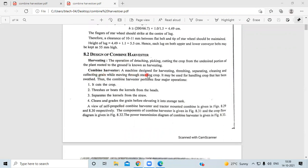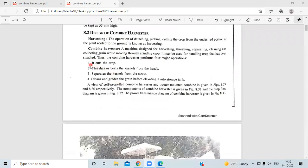Combined Harvester is a machine designed for harvesting, threshing, separating, cleaning and collecting the grain while moving through the standing crop. It may be used for the following purposes.